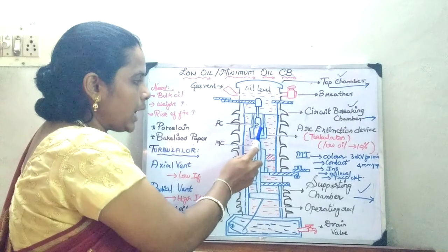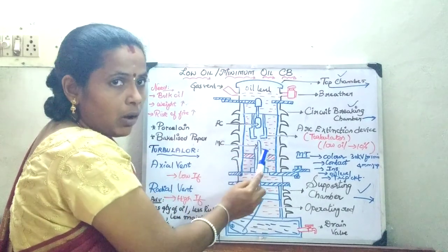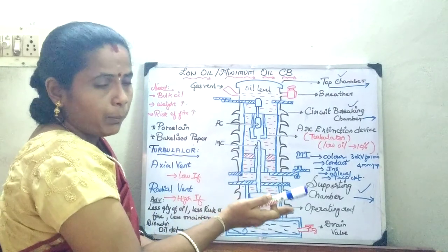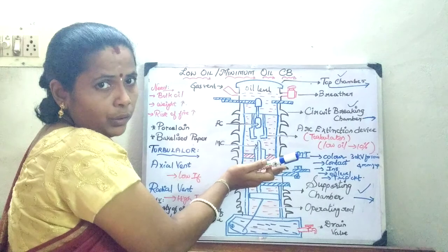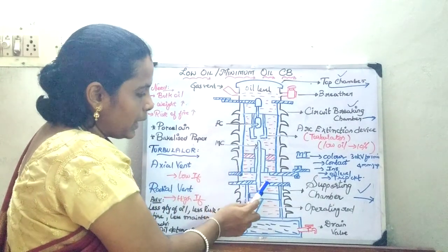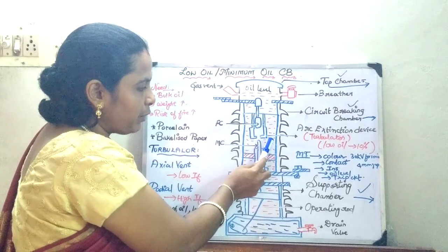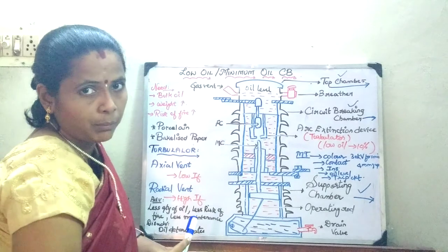Because whenever the arc is struck, the heat in the arc is going to decompose the oil and the carbon arc deposits are going to be in the oil itself. In that case here, this partition serves a better purpose because this partition does not allow the oil from the circuit breaking chamber to enter into the supporting chamber.